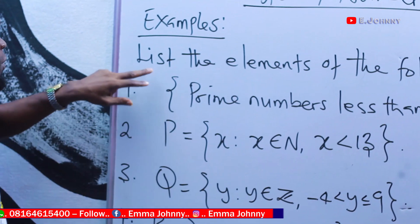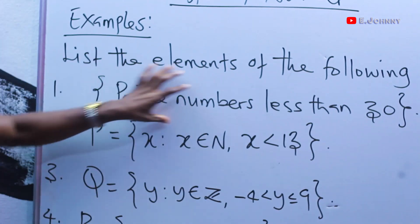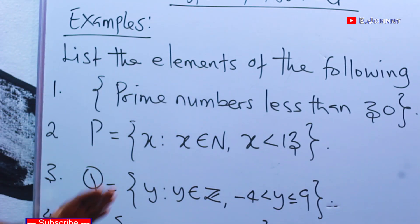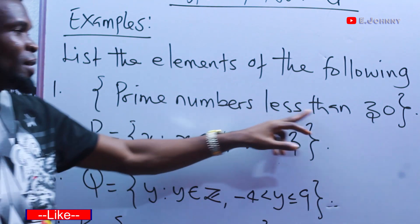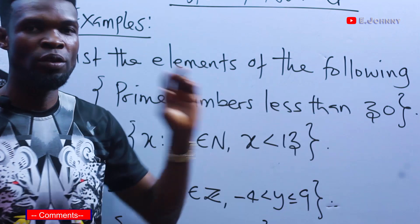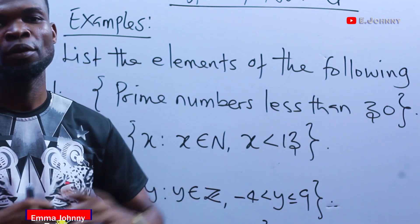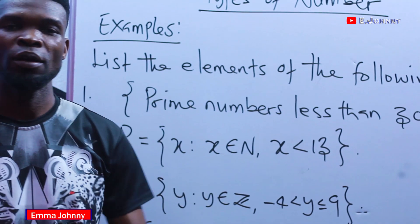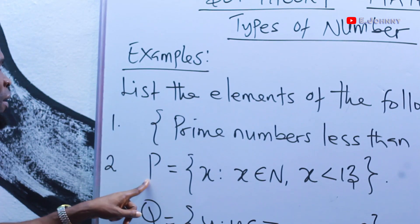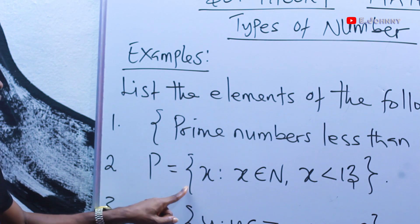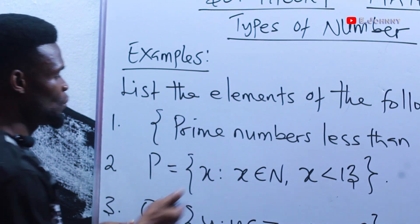The question asks us to list the elements of the following sets. The first set is a set of prime numbers less than 30. You should first ask yourself: what are prime numbers? That will help you to list the elements of the set.